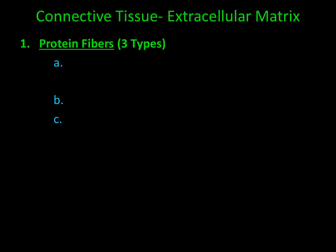Let's take a closer look at the first component, which are protein fibers. Remember, protein fibers are produced by a specific type of cell called a fibroblast, maintained by a fibrocyte, and broken down by a fibroclast. There are three types of protein fibers.